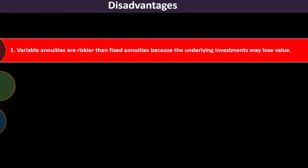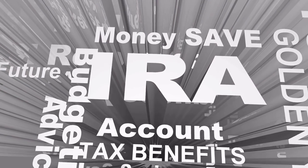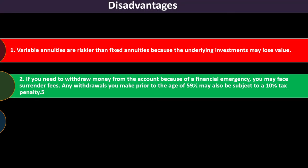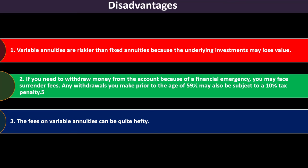Disadvantage number one: variable annuities are riskier than fixed annuities because the underlying investment may lose value. Disadvantage number two: if you need to withdraw money due to a financial emergency, you may face surrender fees — it's not as easy to pull money out as it would be from a regular stock and bond account. Any withdrawals prior to age 59 and a half may also be subject to a 10% tax penalty. Disadvantage number three: the fees on variable annuities can be quite hefty.